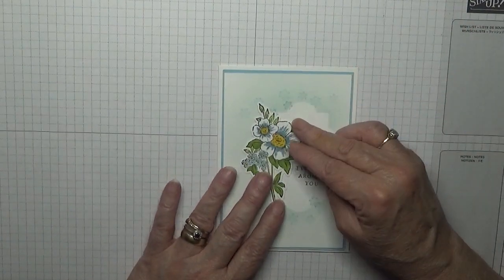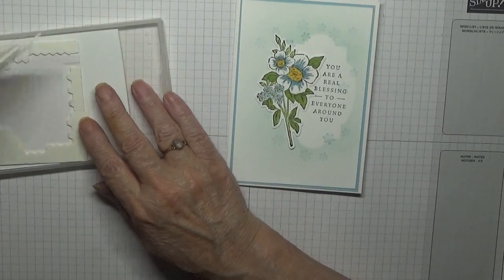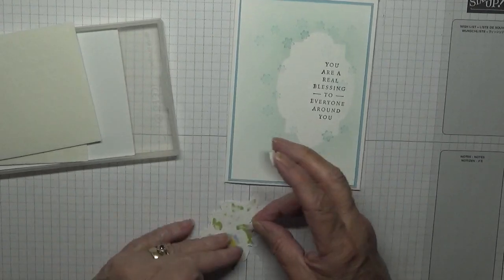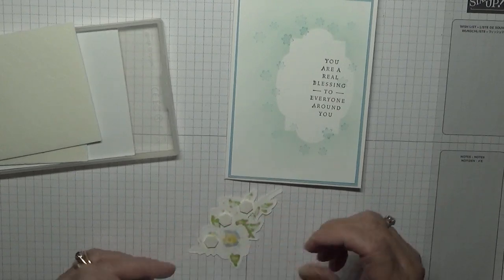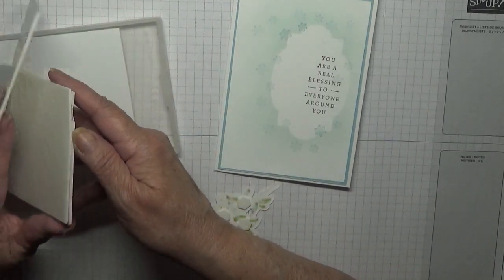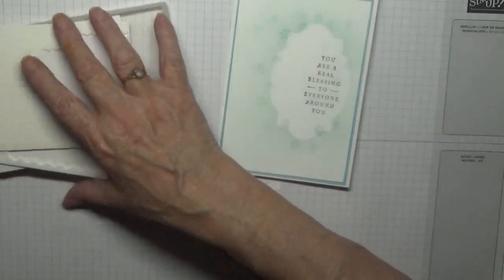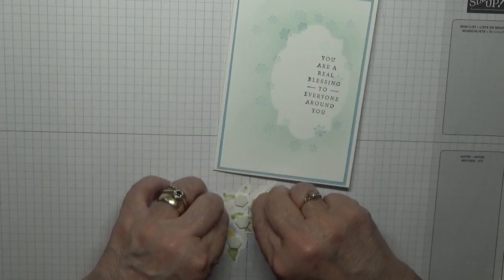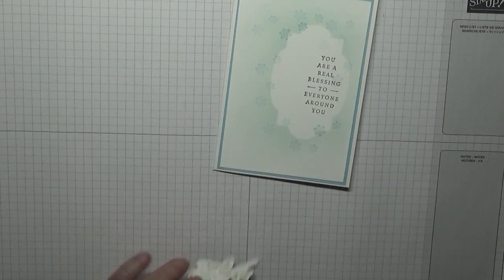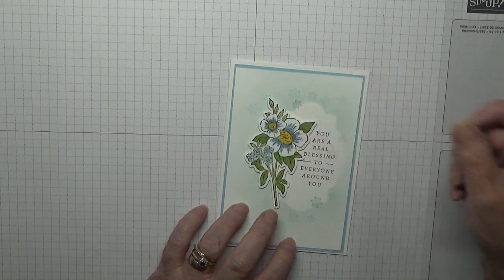Now this used to go on there like that but it goes on with dimensionals. This is a small one. I'll take all the back ends off and place that like that there.